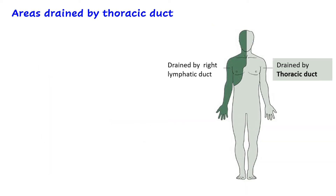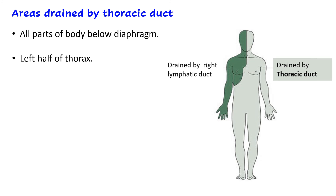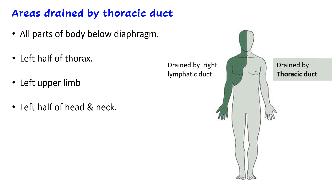Looking at the areas drained by the thoracic duct: the light green area in the diagram represents the region drained by the thoracic duct, while the dark area is drained by the right lymphatic duct. The thoracic duct drains all parts of the body below the diaphragm, plus the left half of the thorax, the left upper limb, and the left half of the head and neck.